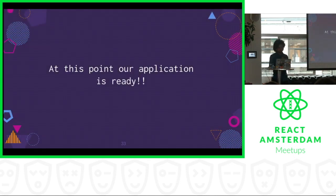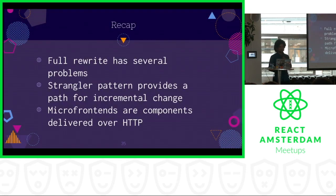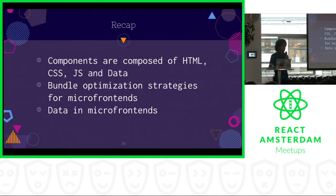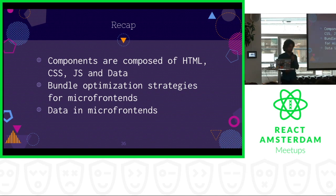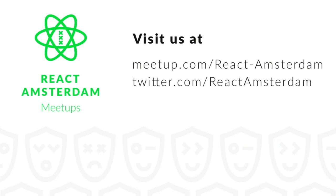Let's do a quick recap. We saw how a full rewrite has several problems. We showed how the strangler pattern provides a path for incremental change. We talked about how micro frontends are like components delivered over HTTP. We took a zoom out and saw how components are composed of HTML, CSS, JavaScript, and data. We saw different bundle optimization strategies for micro frontends. And we saw how data in micro frontends can be served. That's it — thanks everyone for attending my talk.